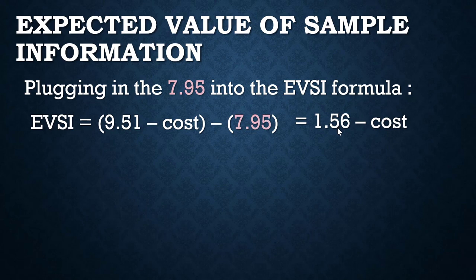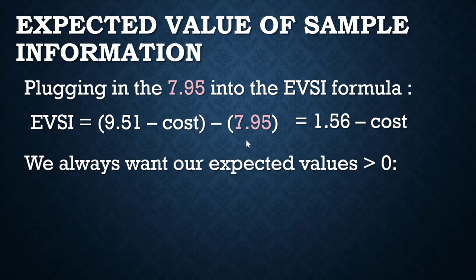The difference between those two is 1.56. Now, subtracting the cost has a caveat: it depends on how you've set up your spreadsheet. If costs are listed as negatives, use a plus symbol so you don't double-subtract. If the cost is listed as a positive number, use a minus sign.